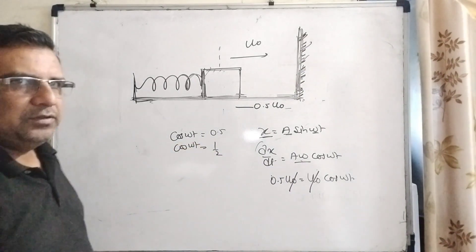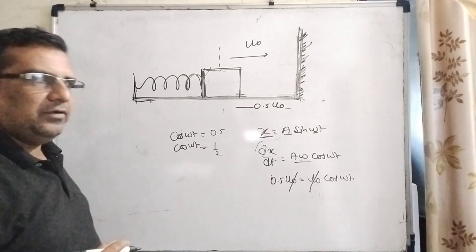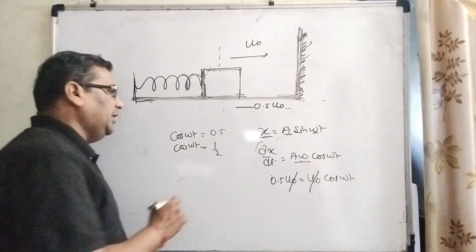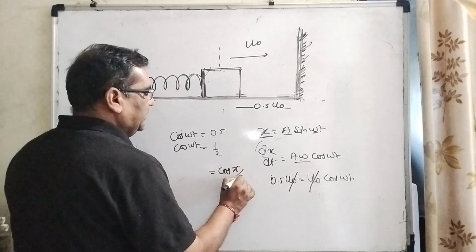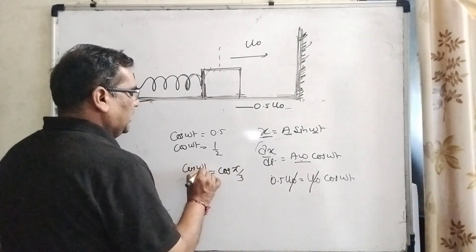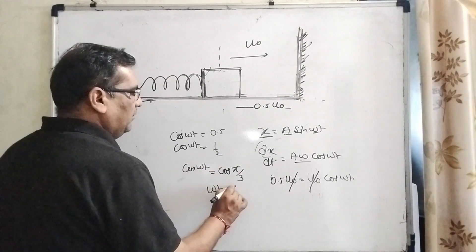0.5 can be written as 1 by 2. You are well known that the value of cos 60 degree is 1 by 2. So it can be written as cos pi by 3 equals cos omega t. Then omega t equal to pi by 3.